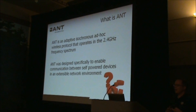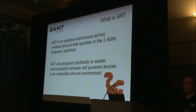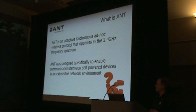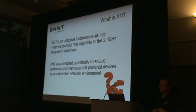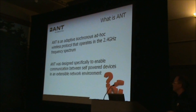ANT was specifically designed to enable communication between self-powered devices in an extensible network environment. From day one, we designed ANT to operate on batteries — everything about ANT was designed to optimize power usage so that you can have self-powered devices, body-worn sensors, and extend battery life to over a year. Because of the way ANT was designed, we are capable of doing scalable architectures and extensible network design. You can do more sophisticated things with ANT than just a simple star topology or peer-to-peer connection — you can do fairly sophisticated network topologies.